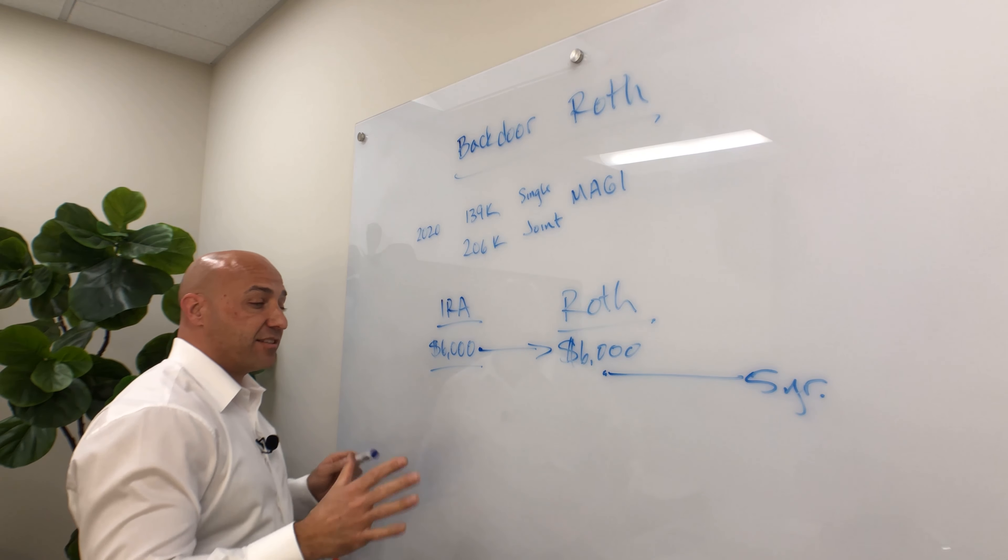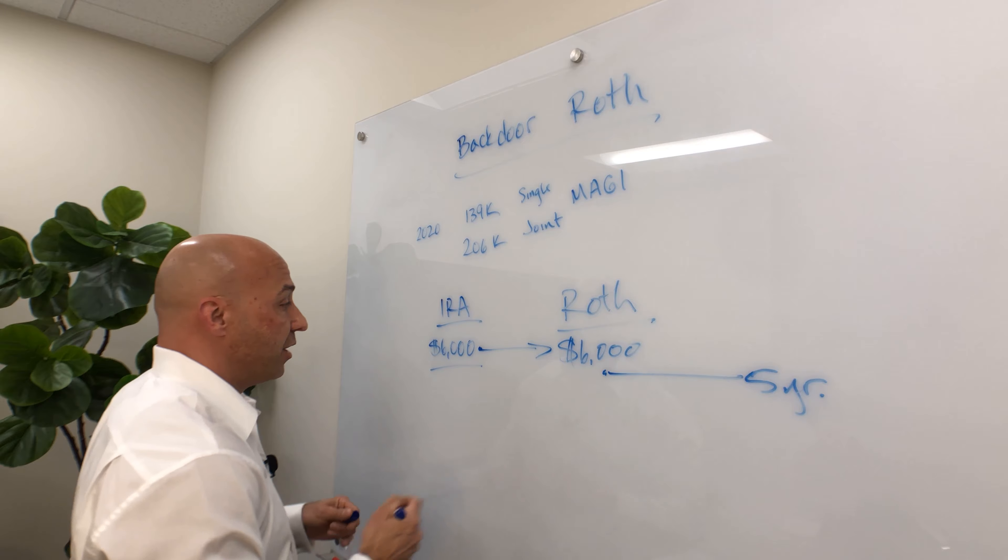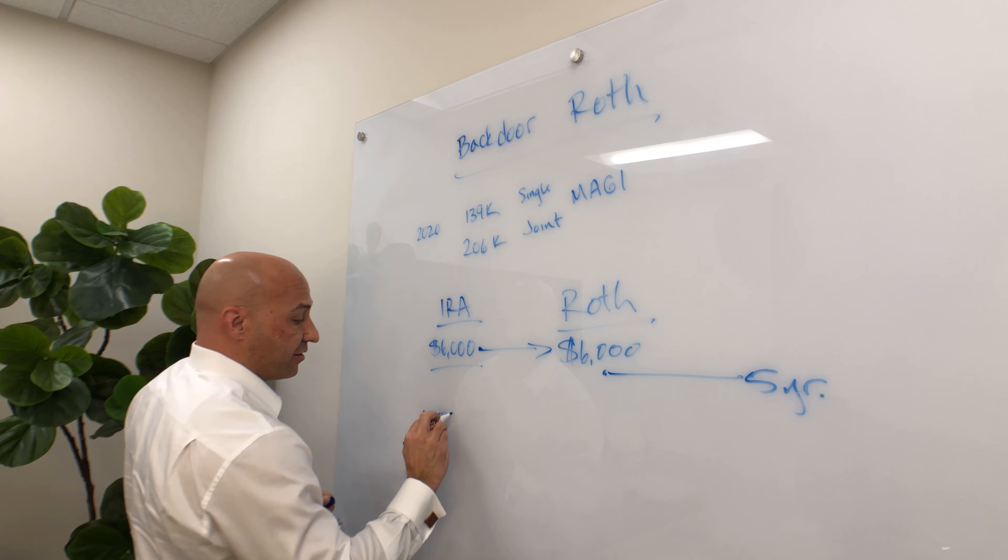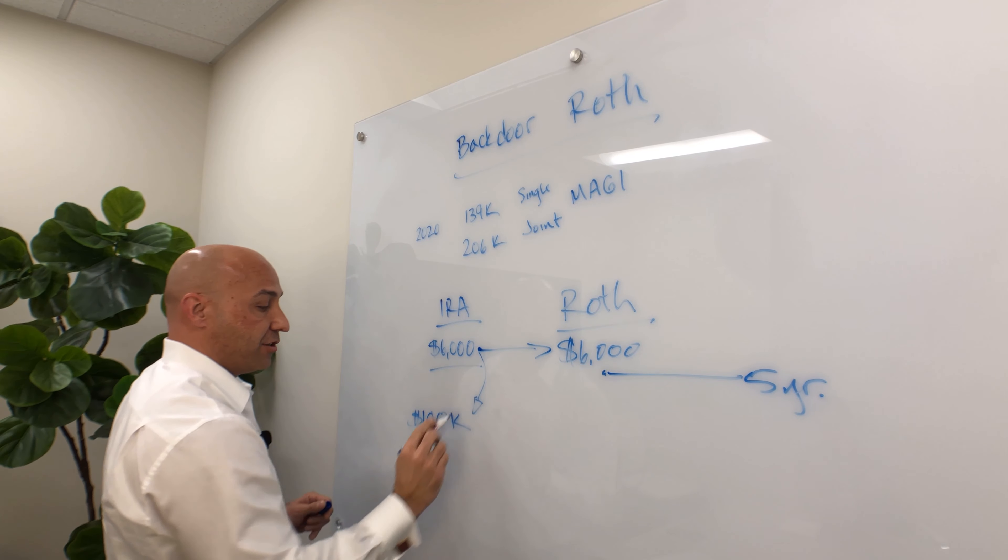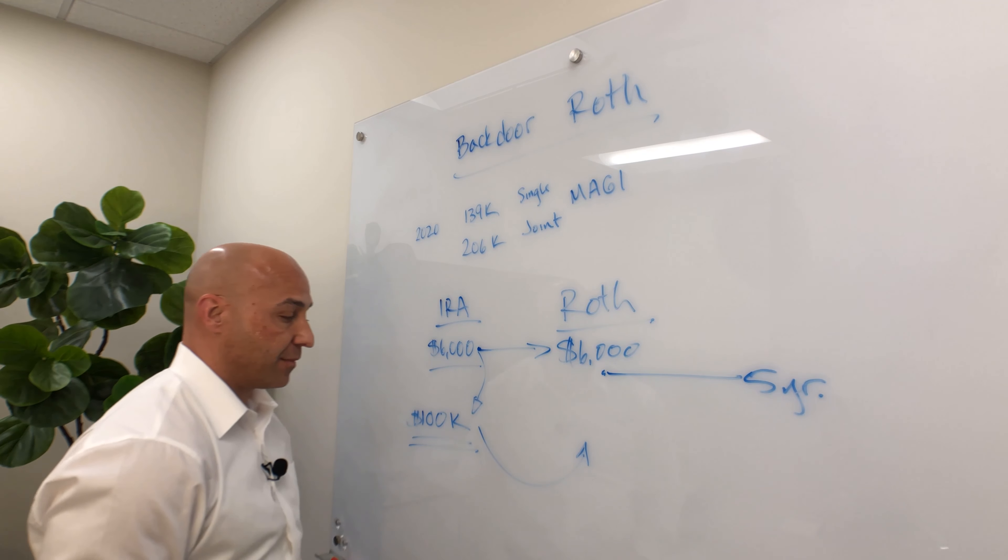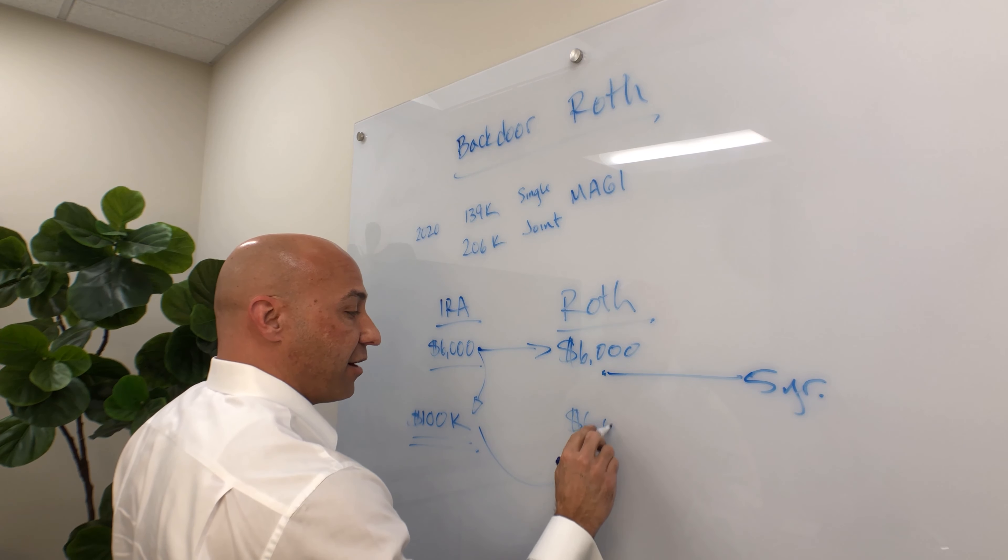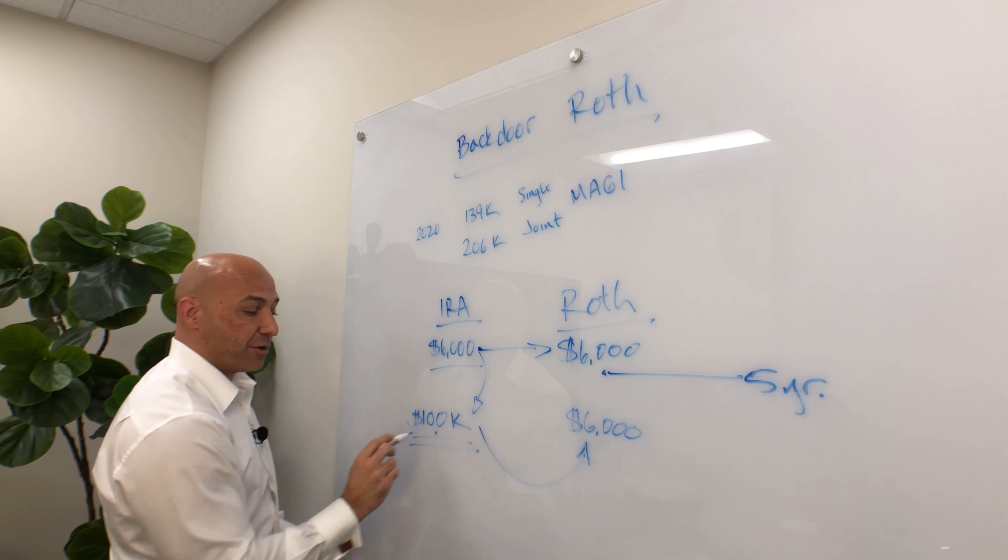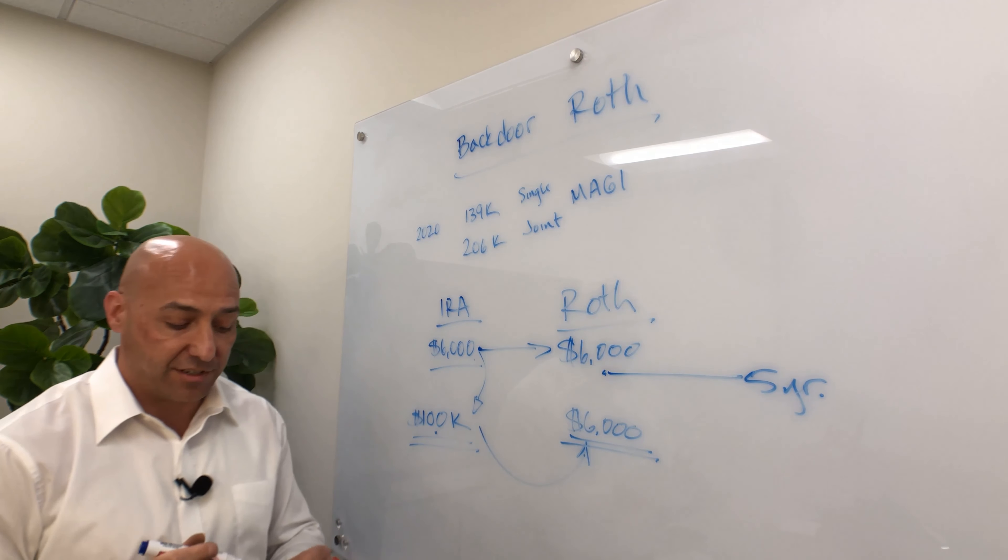The other thing to think about is this pro rata rule. This is a little complicated. You're definitely going to want to discuss this with your accountant. But let's say you already have an IRA that has $100,000 in it, and you make a $6,000 contribution to that same IRA. When you do that Roth conversion, it's taken pro rata. So a portion of that $6,000 that you move over to your Roth IRA is going to be from the non-deductible contribution, and a portion of it is going to be from your original $100,000, which means a portion of this $6,000 is going to be taxable.